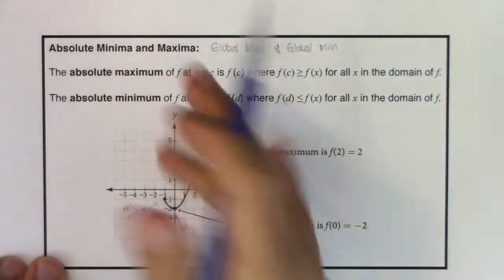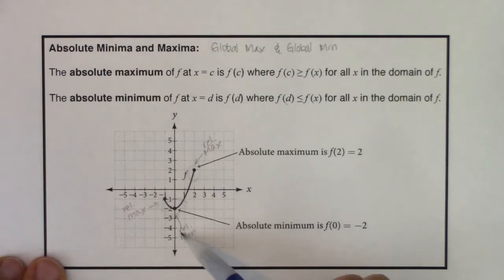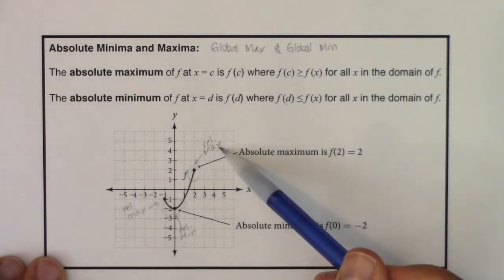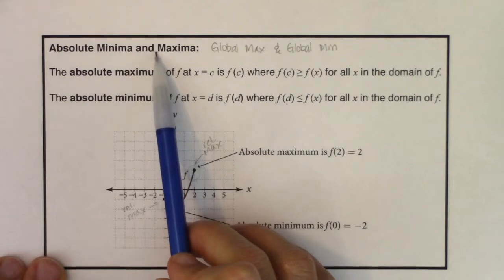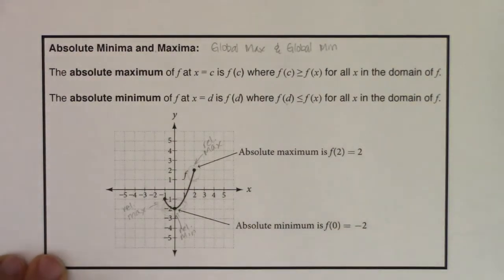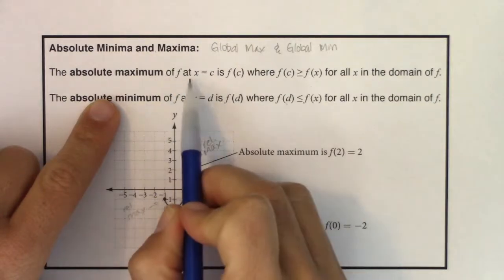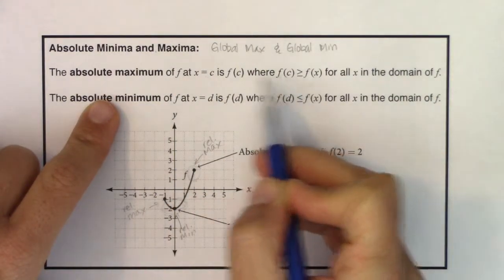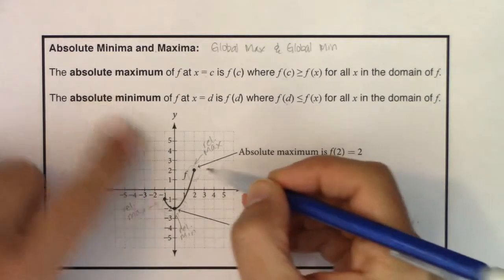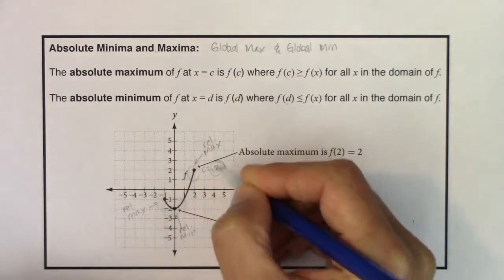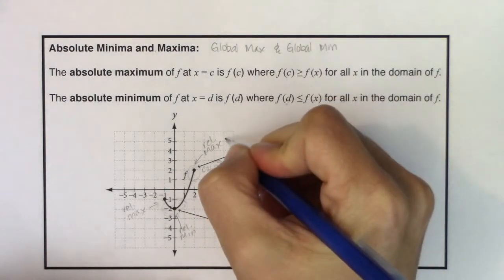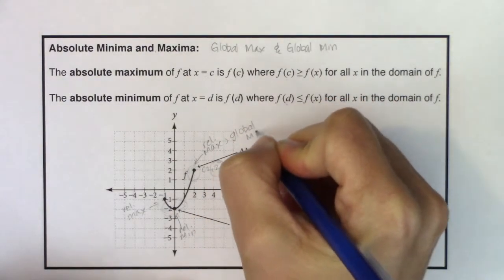I have two relative maxes and a relative min. Now, there are times — though not always — when some of your relative maxes and mins also become absolute maxes and mins. There's no rule that you'll always have an absolute max or min; you have to look at your graph. Is there any point c where f(c) is higher than every other y-value? Yes — the point (2, 2): that y-value of 2 is higher than every other y-value, making it not just a relative max but a global max.